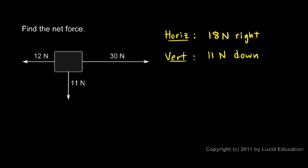So I can imagine these two horizontal forces, the 30 and the 12, being replaced by a single 18 newton force to the right. And I can draw a picture like this. I'll draw my mass, and I'll draw two forces acting on it: 18 newtons to the right and 11 newtons down.